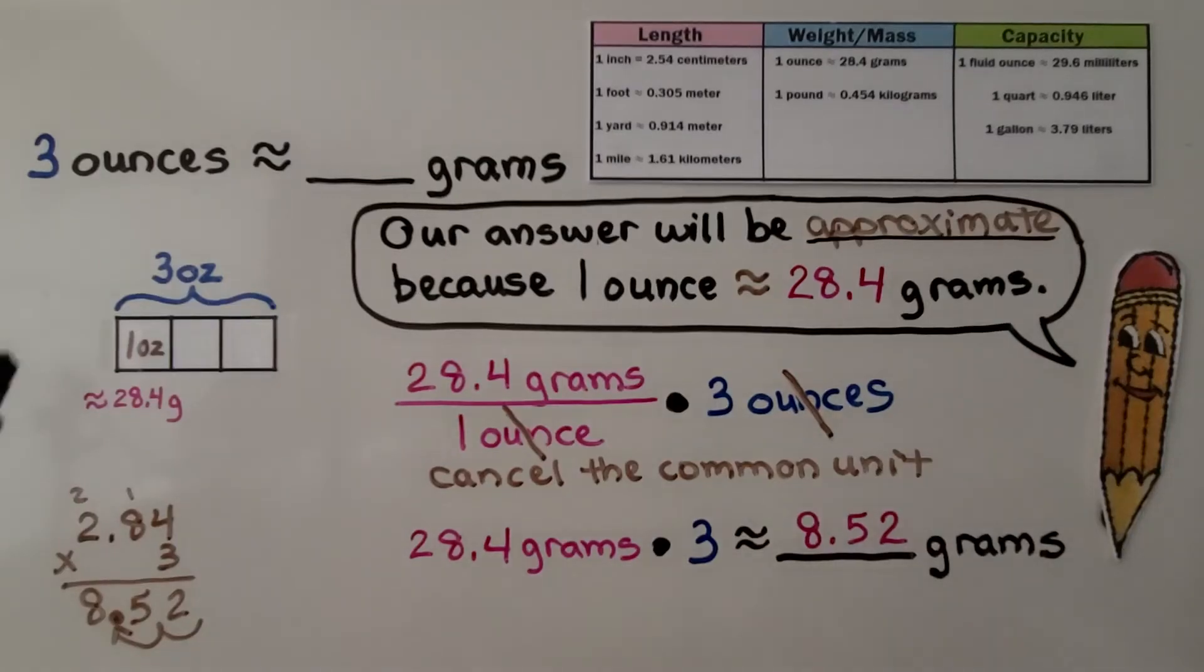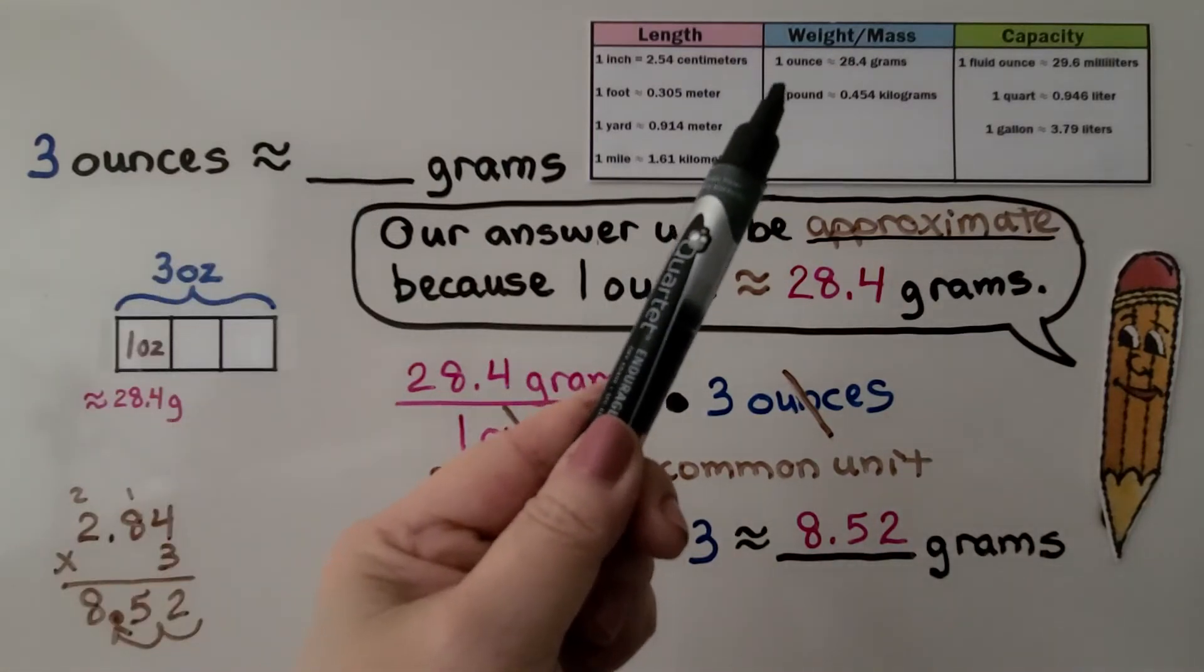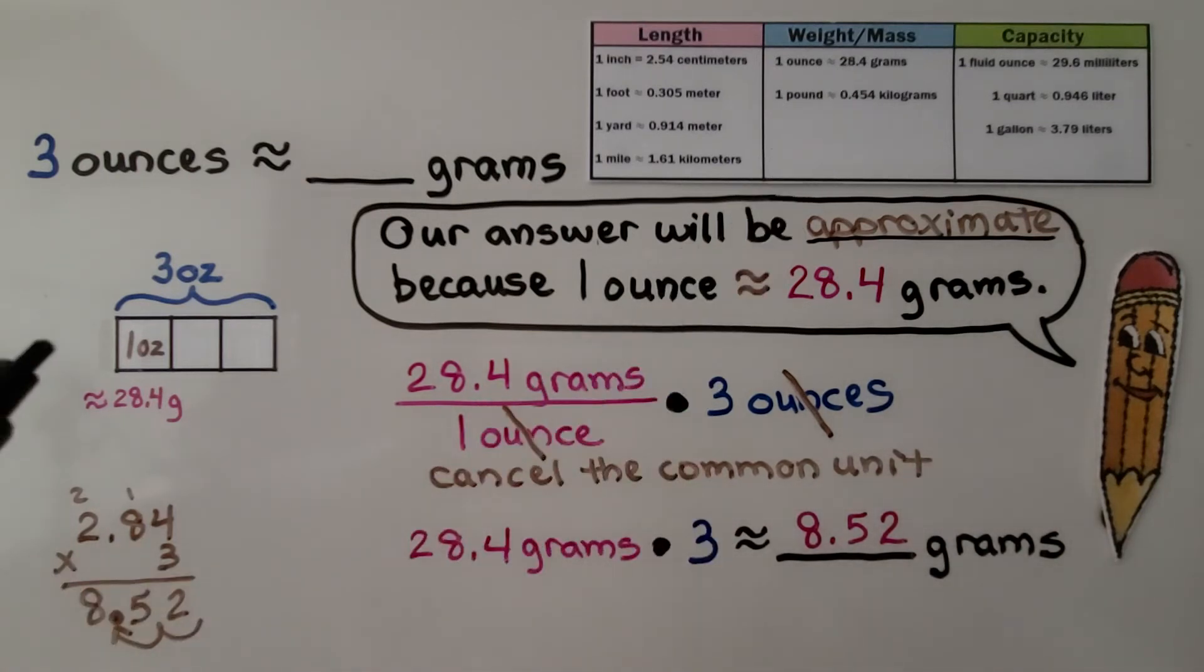Here we need to convert 3 ounces to grams. 1 ounce is 28.4 grams. We have our bar diagram. We have 3 boxes for the 3 ounces. Here's 1 ounce which is approximately 28.4 grams. That means we need 3 of these.